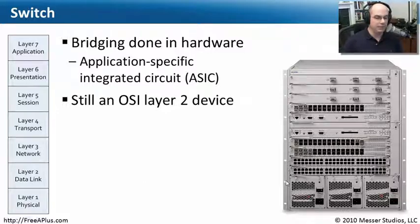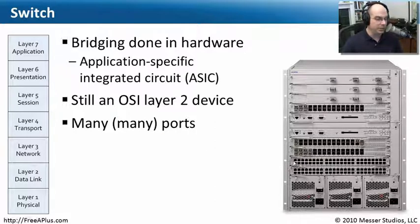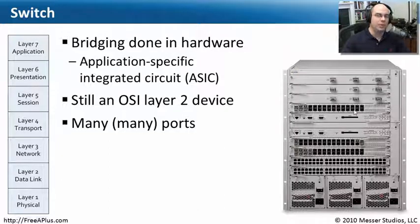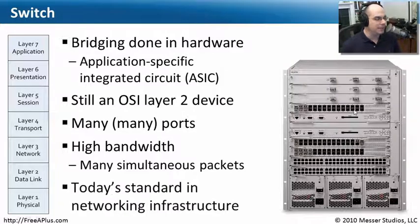A switch is a very fast device, but not very intelligent in how it works. We can have a lot of ports on this device. Because I'm not retransmitting traffic out every other port, I can scale these networks to be very, very large. Multiple simultaneous streams can flow — a port here communicating there, another port communicating elsewhere — creating multiple lanes of traffic, which is a very efficient way to communicate. You can get really high bandwidths, with many packets going across simultaneously. And in any modern network, you're going to have switches everywhere.